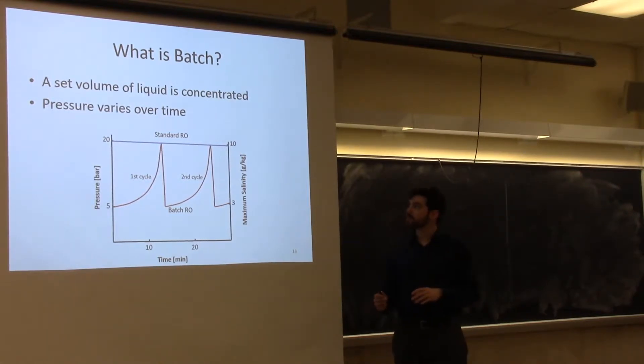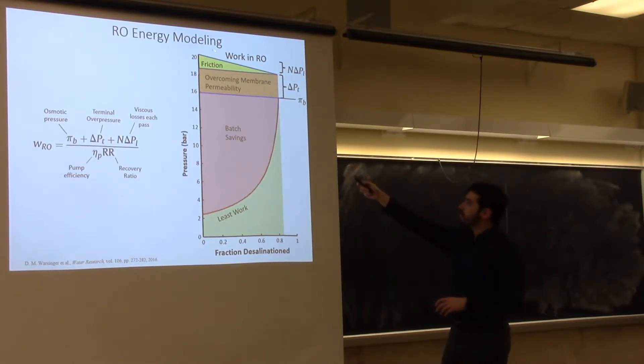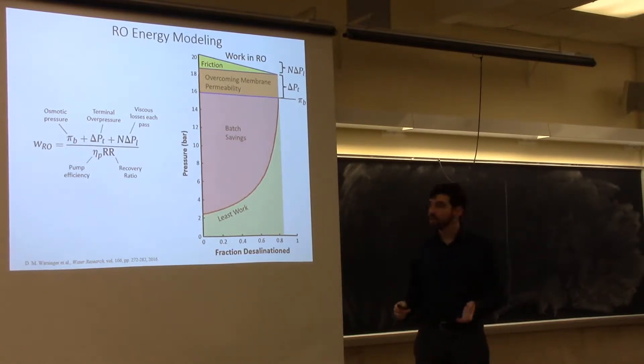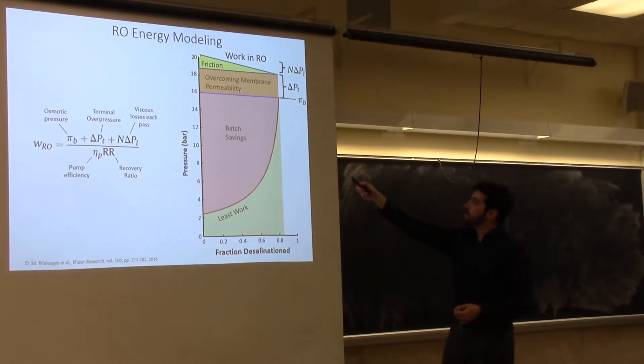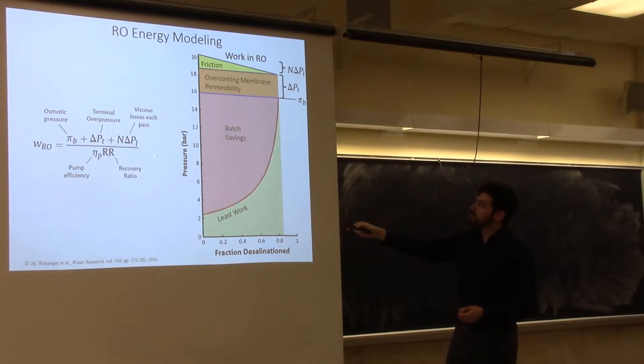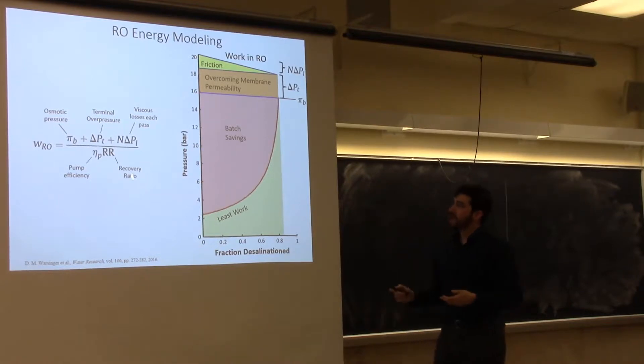I've shown a graph of the standard energy used in traditional reverse osmosis. This is looking at relatively high recovery for a brackish water source. In regular RO, you have this high pressure and then you have some fraction of work which is overcoming viscous losses, some fraction overcoming the membrane permeability, and then we also have this excess energy which is beyond what we need. This is occurring because the final pressure applied needs to exceed the final osmotic pressure.